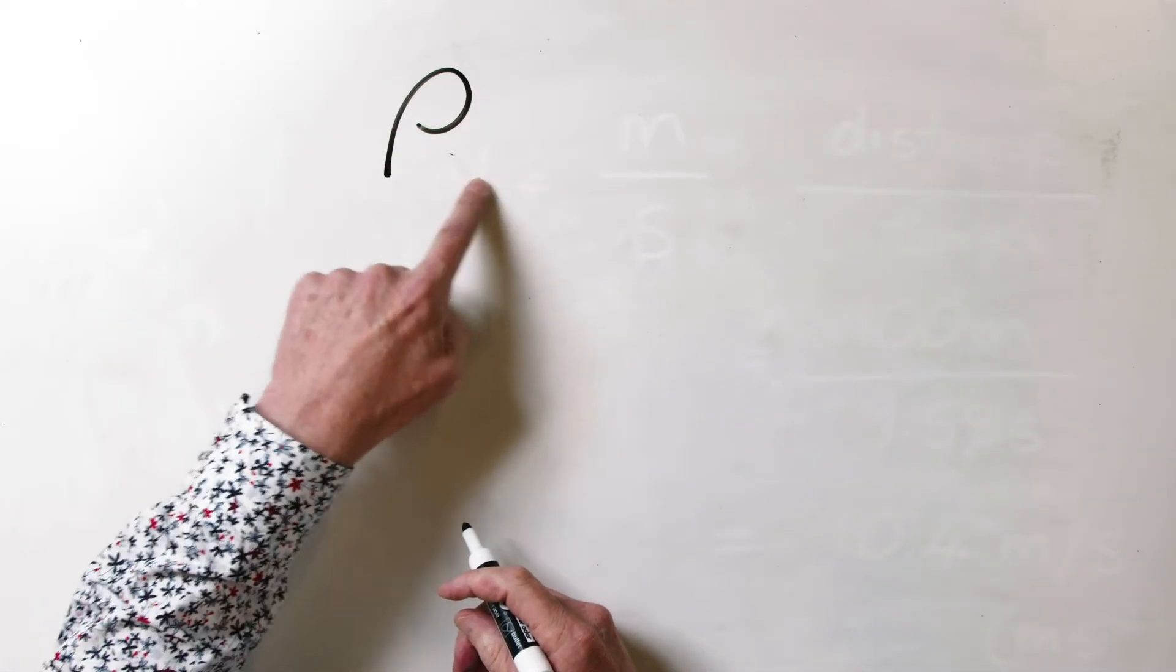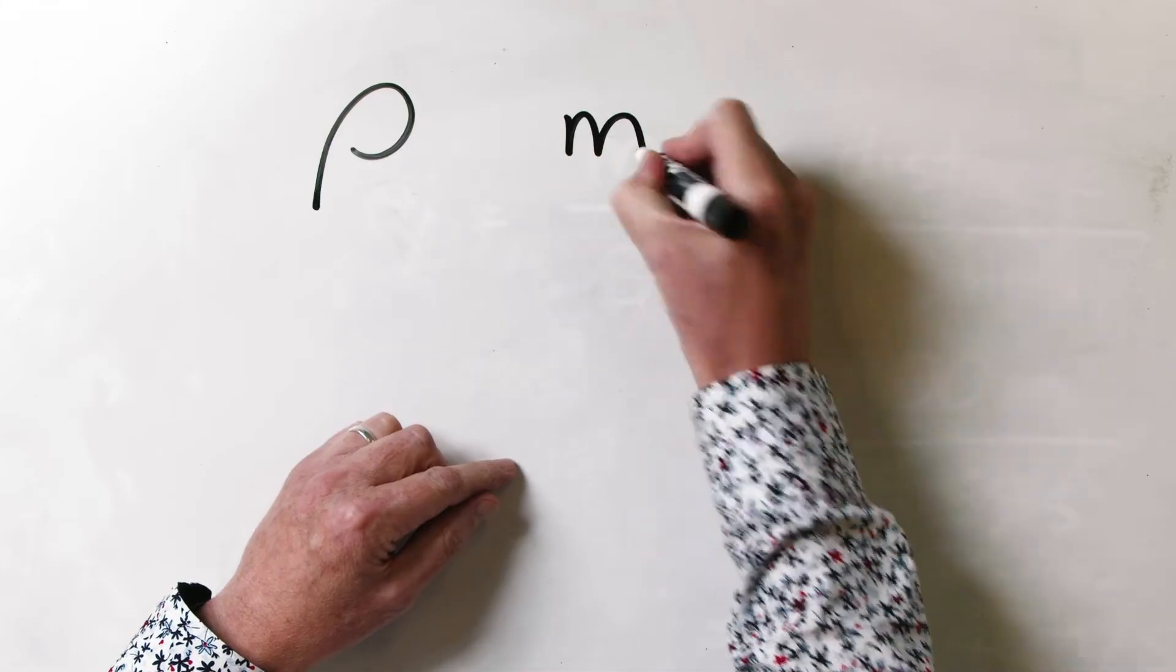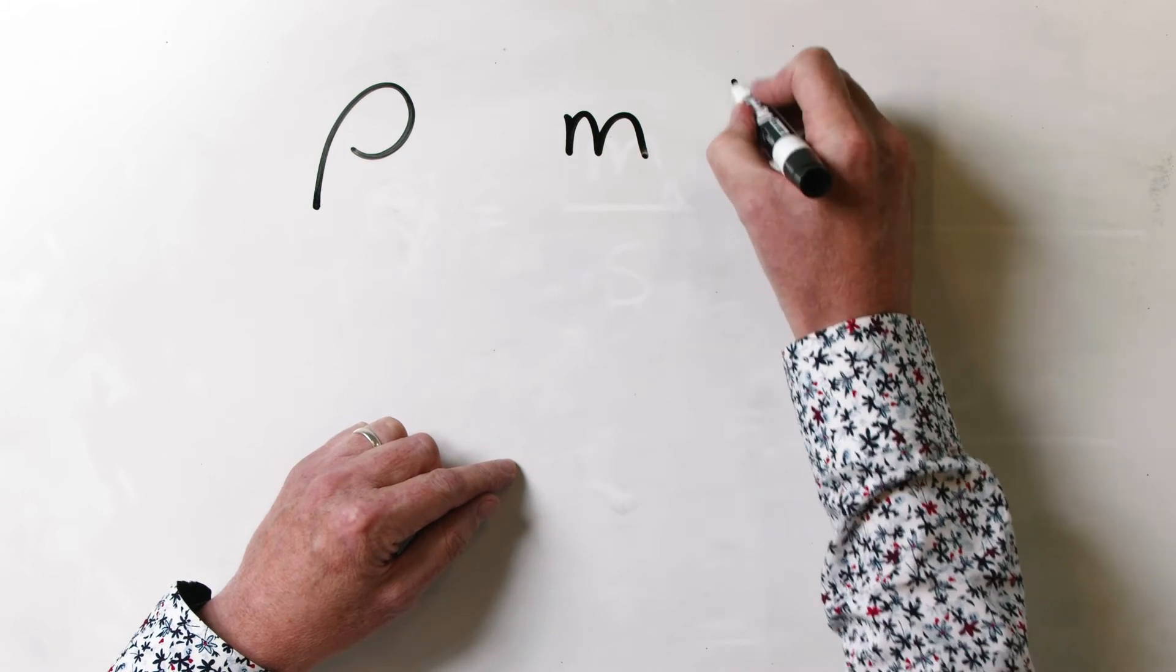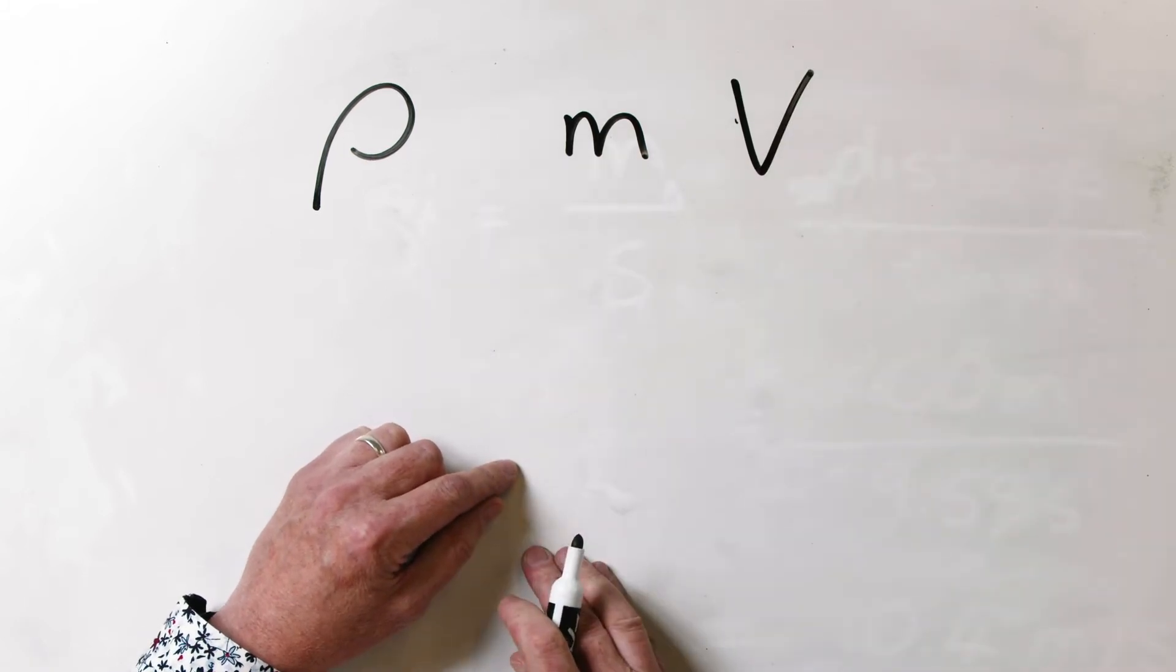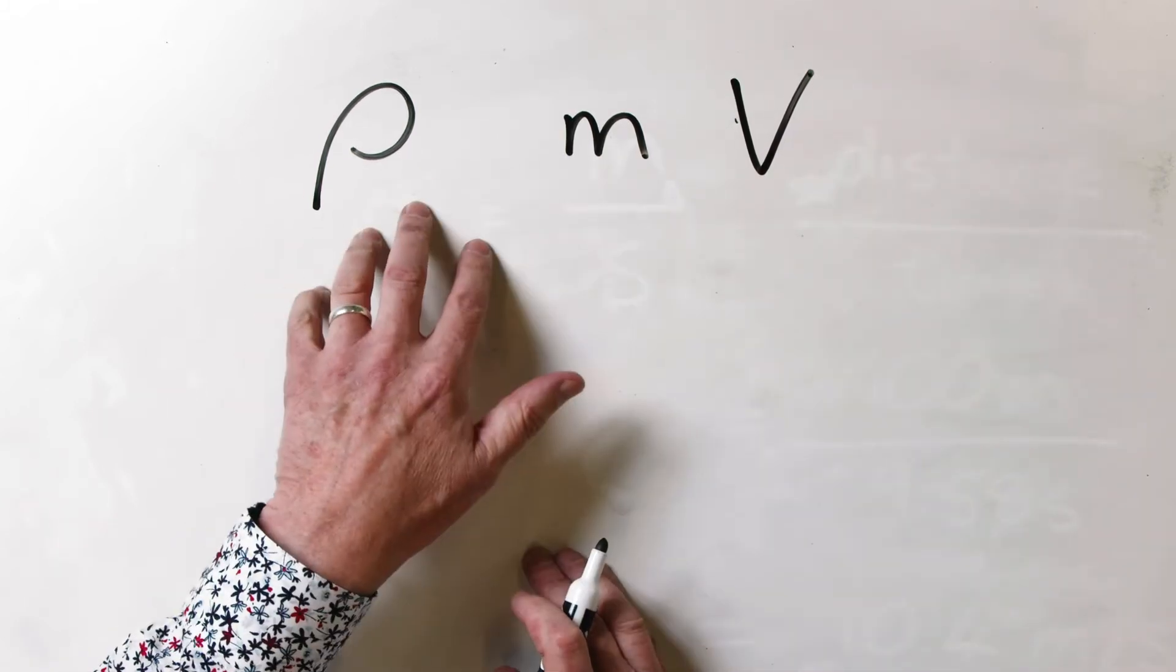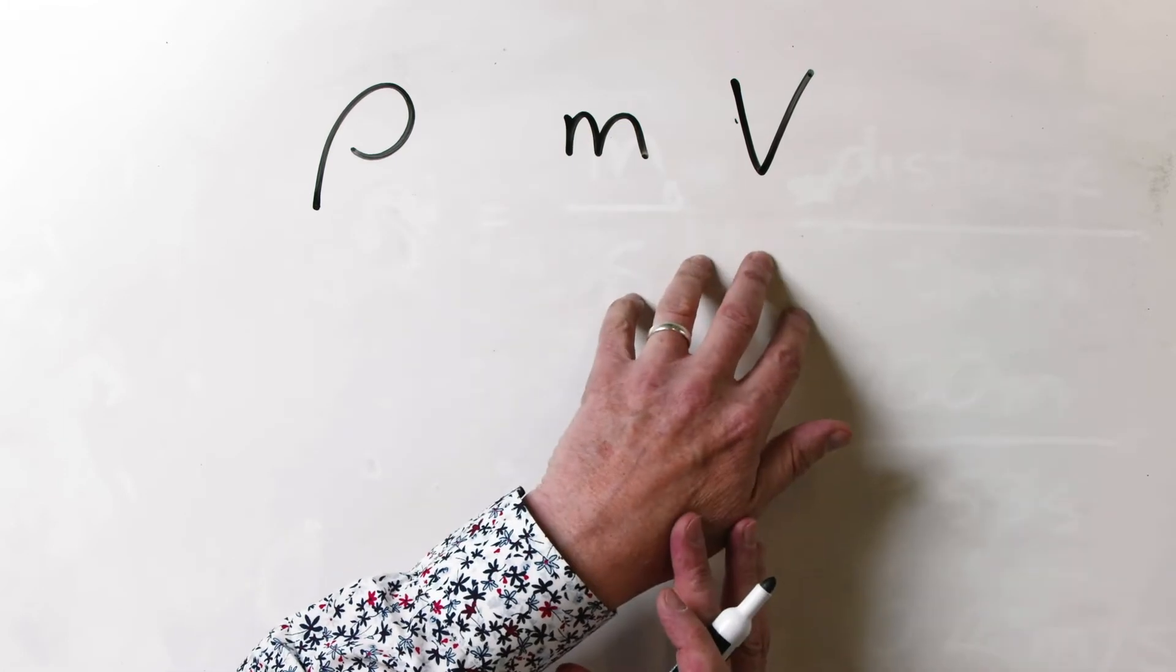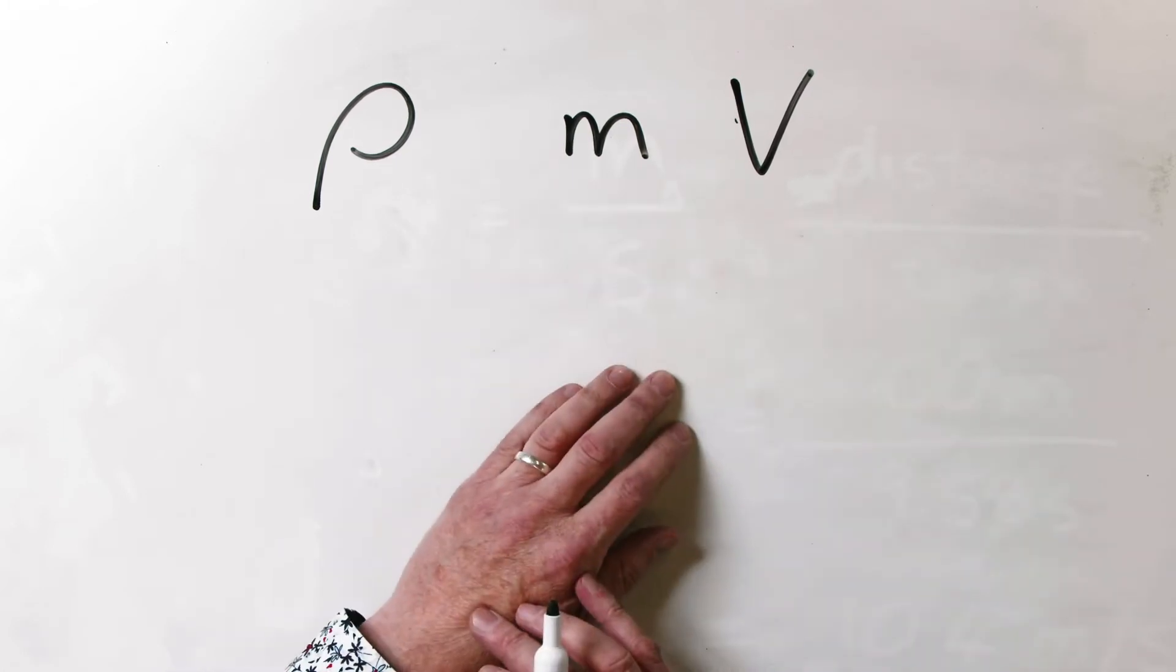Density is abbreviated by the Greek letter rho. What's density? Let's think of something that's really dense, like gold or lead. They're really dense. There's a lot of mass in a very small volume. That's what density has to do with. Density is related to mass, and density is also related to volume. So can we figure out what the equation for density is, knowing that it involves mass and volume?